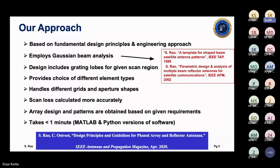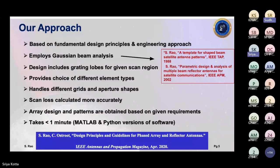Our approach is based on fundamental design principles and an engineering approach using Gaussian beam analysis. We wrote a paper in 1988 — about 34-35 years back — when I was in Canada working for SPAR Aerospace. The motivation then was to use radiation templates to describe shaped beam patterns on the ground for interference analysis. We used Gaussian beam analysis and compared it with several measured patterns from BrazilSat, ENEQE, ENEQD, and four or five satellite programs. Results were very accurate.